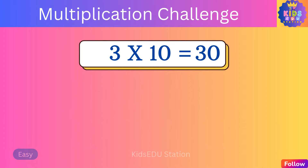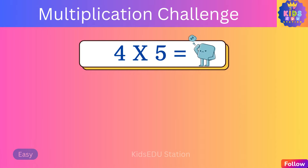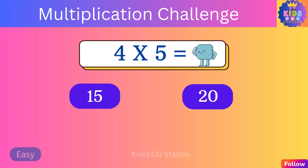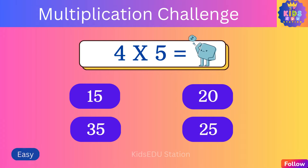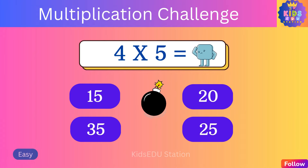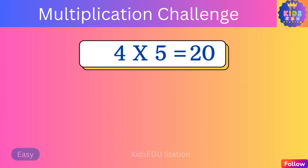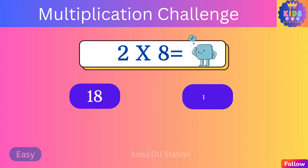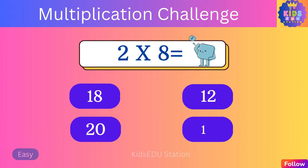Three times five is fifteen. What is two times four? Eight, six, twelve, four. Two times four is eight. What is three times ten? Twenty, forty, thirty, fifty.